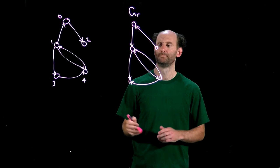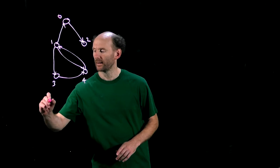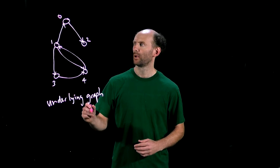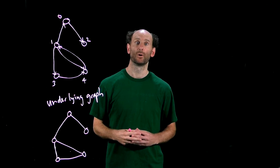Sometimes we want to take a digraph and simply ignore the direction of the arcs, instead looking at the so-called underlying graph. In this example, the underlying graph looks like this. And notice, well, two arcs can exist between the same two nodes. They merge into the same edge, a single edge, in the underlying graph.